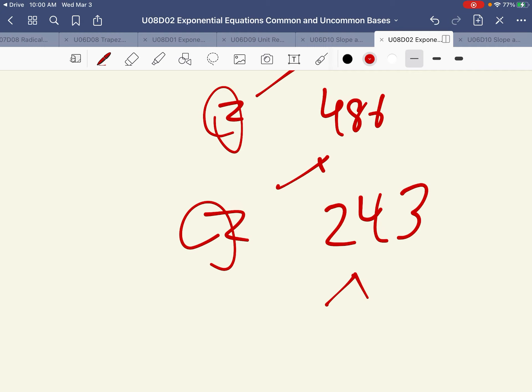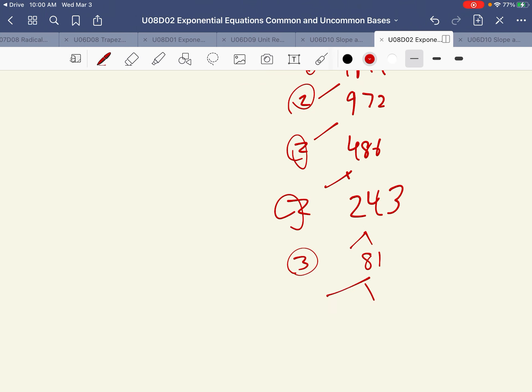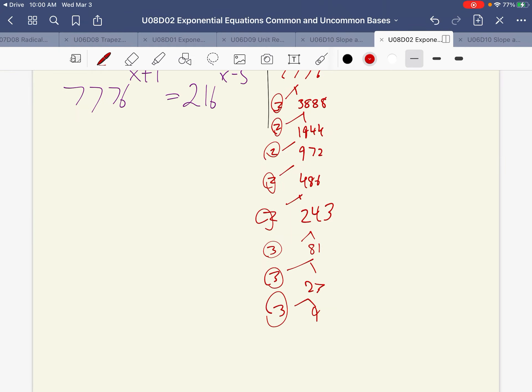And we get 3, and 81. 81 is going to be equal to 3 and 27. And 27 is going to be equal to 3 and 9. And 9 is going to be equal to 3 and 3.